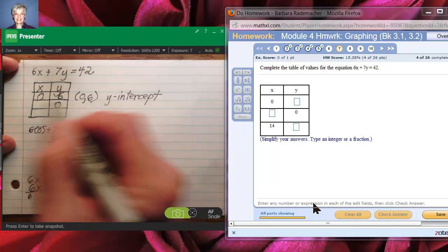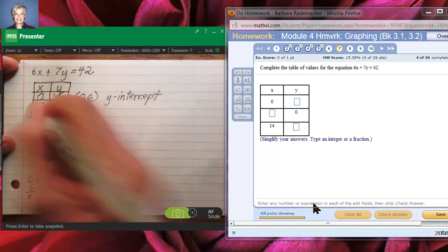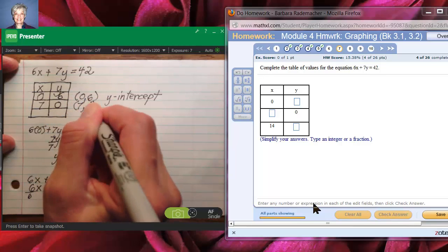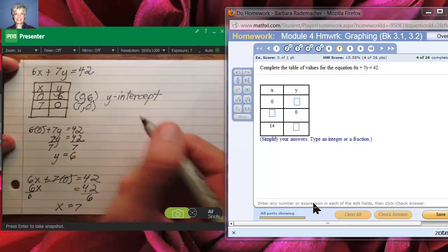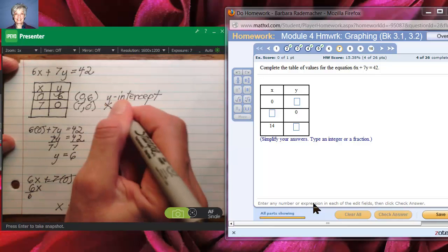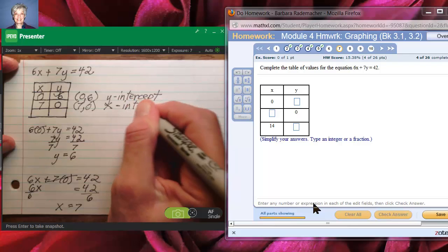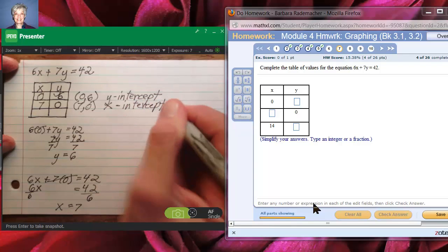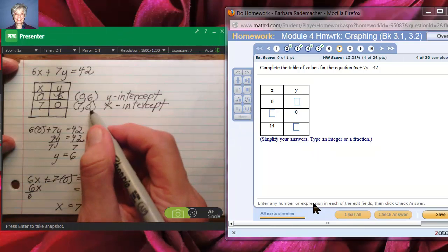So when y is 0, x is 7. The point (7, 0) with a 0 in the second position is called the x-intercept. And this is the point at which the line crosses the x-axis.